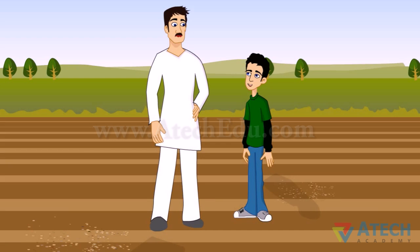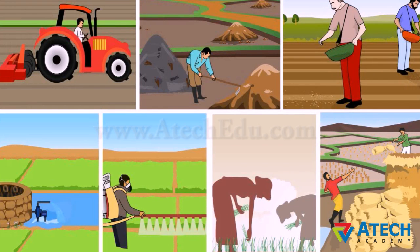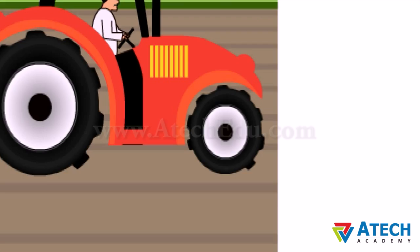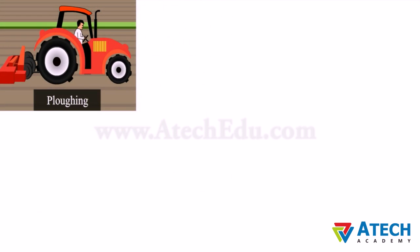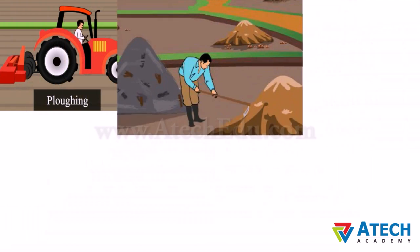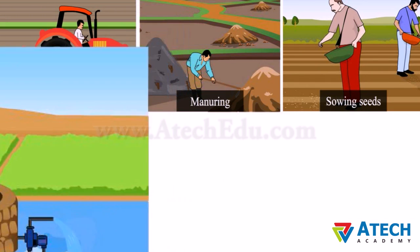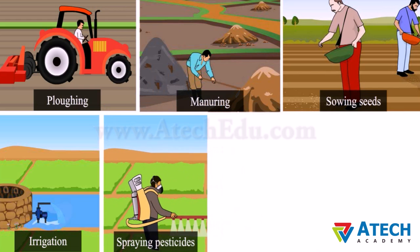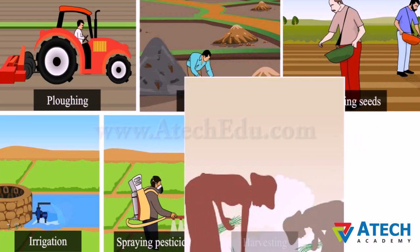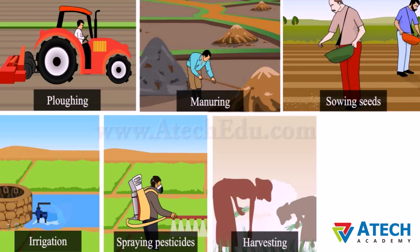Ravi asks how farmers cultivate. His father explains that many steps must be performed before cultivating a crop — these are called agricultural practices. They include: plowing the field to loosen the soil, manuring for good yield, sowing seeds, irrigation, spraying pesticides and weedicides, harvesting the crops, and storage.